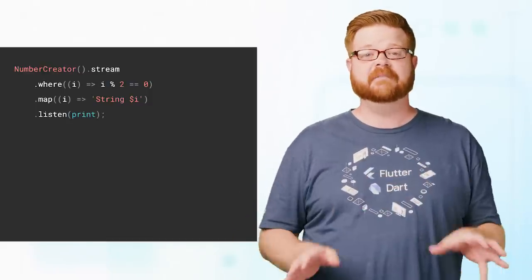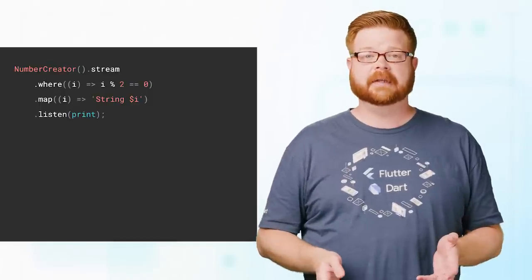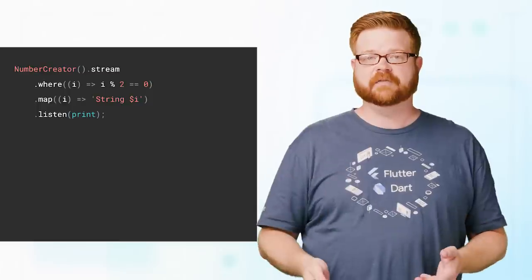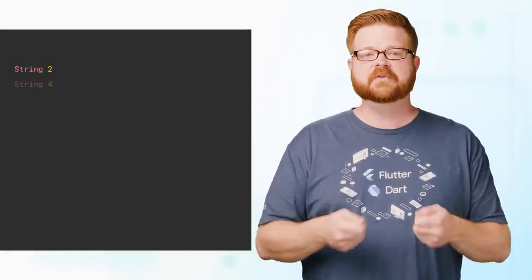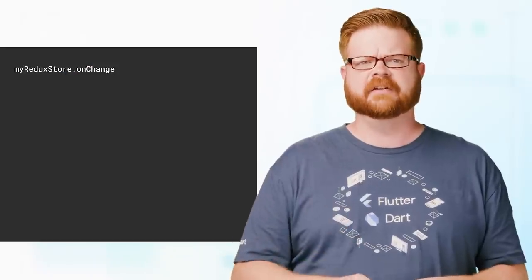There's a ton of methods you can chain up like this. If I only want to print the even numbers, for example, I can use where to filter the stream. I give it a test function that returns a boolean for each element, and it returns a new stream that only includes values that pass that test.